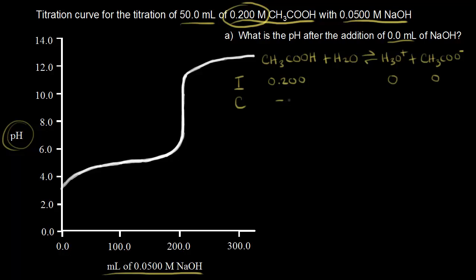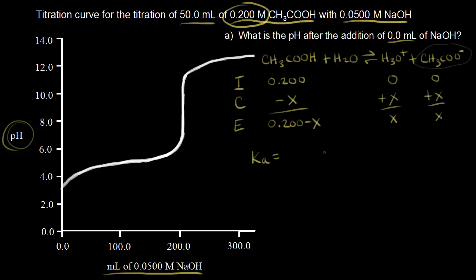For the change row: whatever we lose from acetic acid, we gain for acetate and also for hydronium H₃O⁺. At equilibrium, acetic acid is 0.200 minus X, acetate is plus X, and hydronium is plus X. When we write our Ka expression — concentration of products over reactants — make sure to watch the video on weak acid equilibrium before proceeding.